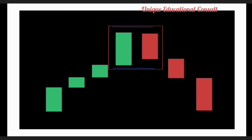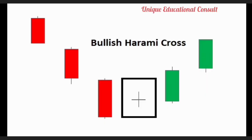The next pattern is bullish harami cross. This pattern forms two candles where the first candle is bearish and the second is a doji cross in green color. This doji cross appears as a sign that the sellers have stopped the advancement of the price to the downside, indicating bullish pressure. From the chart you see downtrend with a gap between the red candles, but when it gets to the doji cross in the box, uptrend appears in the market price movement.